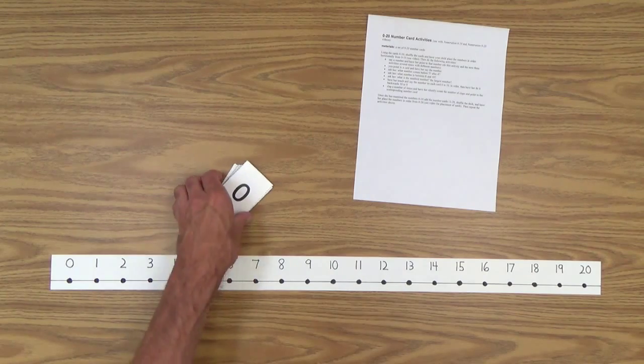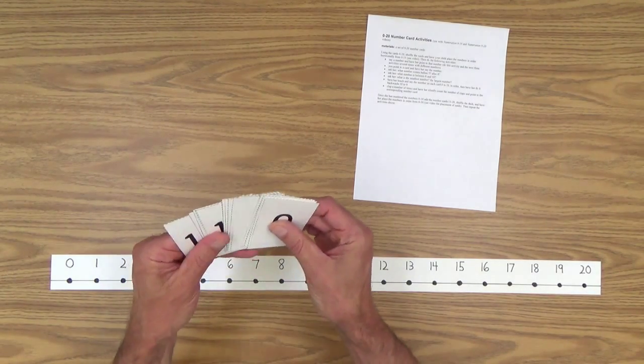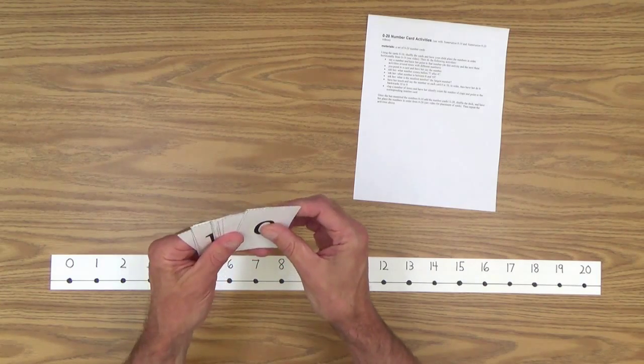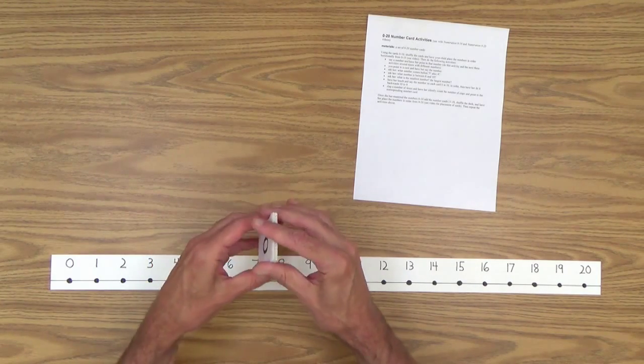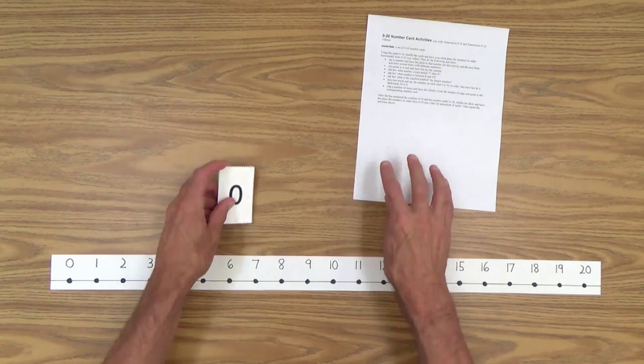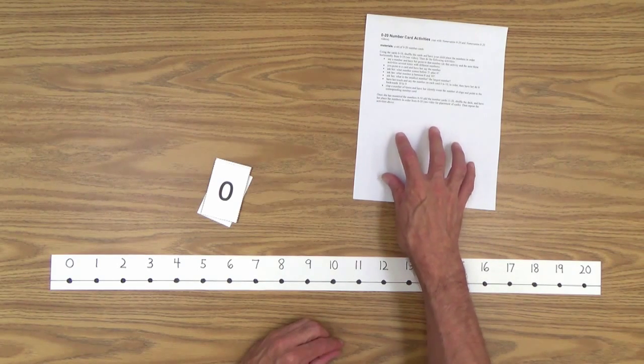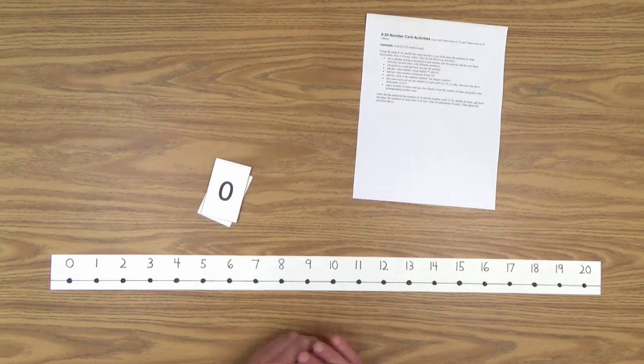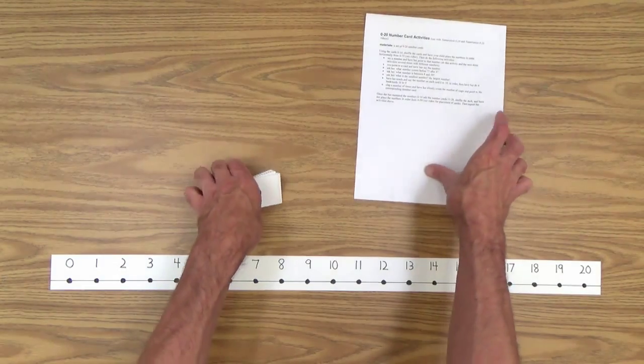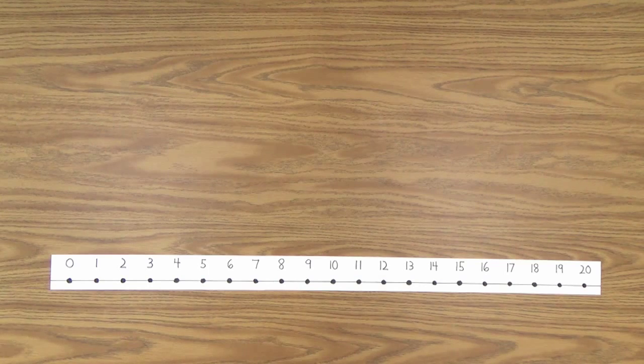You will also need a deck of zero to 20 number cards. So that's 21 cards total. And of course, you can make these yourself, as I said in the last lesson. And also from the last lesson, again, the printable zero to 20 number card activities. All right, let's start out first, just talking about the number line.